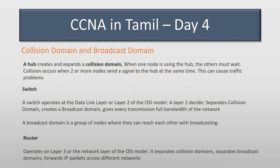In this case, we have a collision domain and broadcast domain. The hub is a collision domain. In the last class, we saw multiple PCs connected to a hub. By default, we have half duplex, and in this case it creates a collision domain. We have a single collision domain.